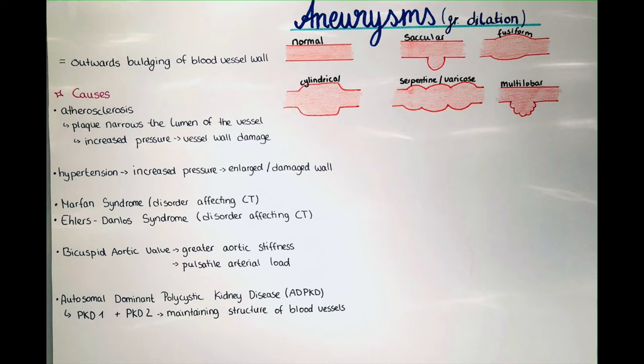Autosomal dominant polycystic kidney disease, or ADPKD, usually leads to intracranial aneurysms. The PKD1 and PKD2 genes are affected in this condition, and these genes play a role in maintaining the structure of blood vessels. When there is a disorder in these genes, the blood vessel wall structure is altered, leading to outbulging or aneurysms.